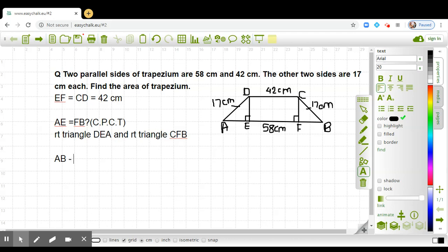If I find AB minus EF, AB is 58 and EF is 42. So when I subtract, I get 16. That means AE plus FB is 16 cm.